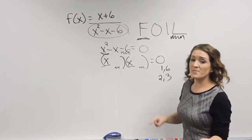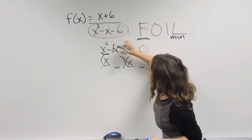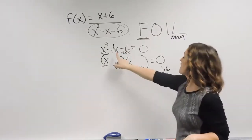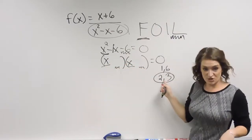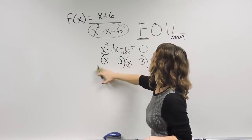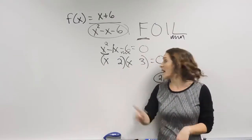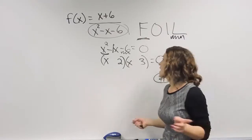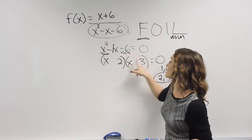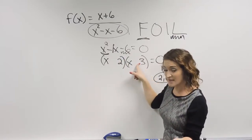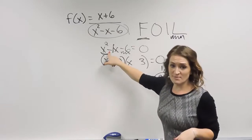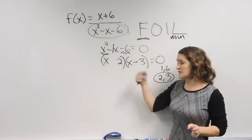We want the combination that multiplies to get 6 but adds or subtracts to get 1 — whatever your middle term is. Since we need the numbers to add or subtract to get 1, that means I want 2 and 3, since 3 minus 2 is 1. For signs, always use this rule: whatever sign your middle term has, the bigger number must have it. Since my middle term is negative, the negative goes with the 3, since 3 is bigger than 2.